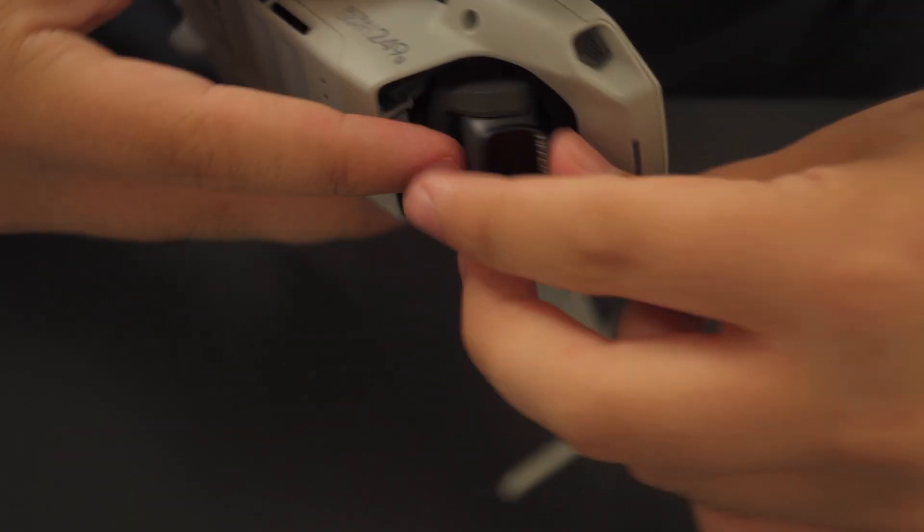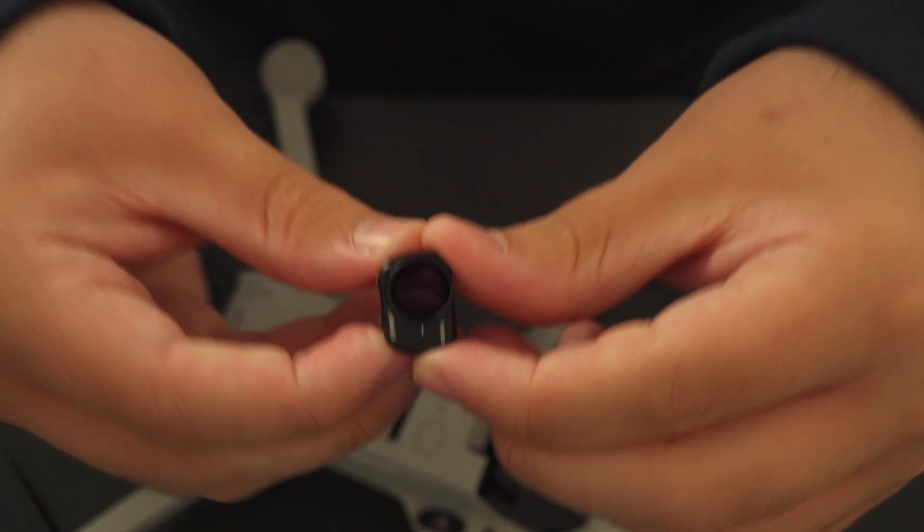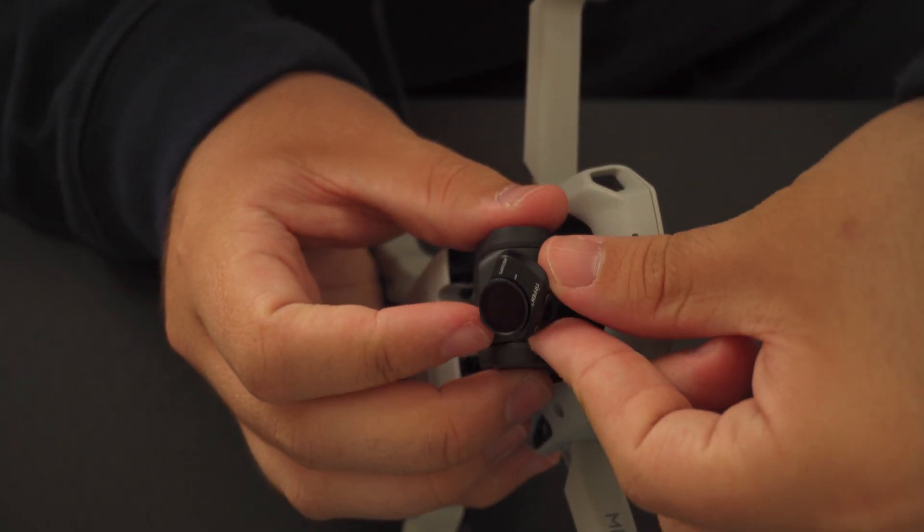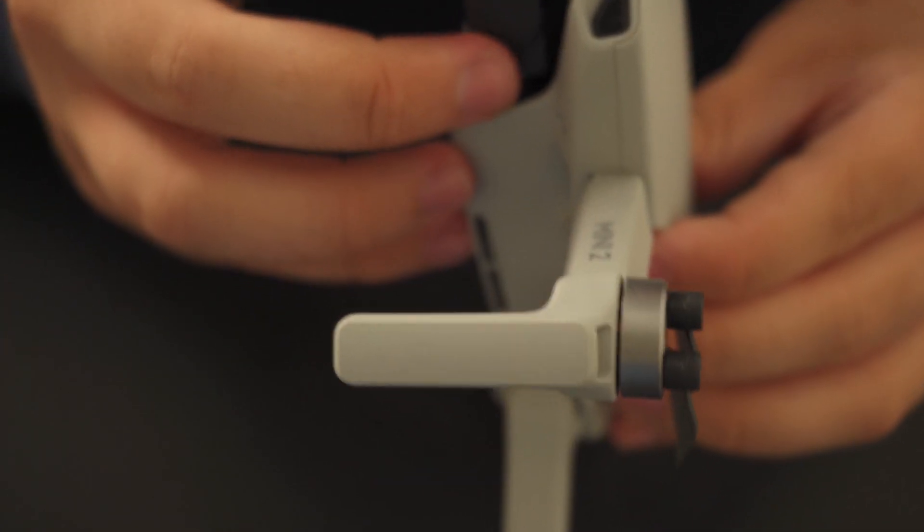So now looking at the variable ND filter let's see if this works. Now that the lens is offset the filters also offset so that should be fine. Clip it in, slide it in front and that one looks to be fitting fine as well. I'm not sure if it's all the way on but it should be good enough.